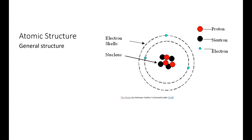If we look at the general structure of an atom, we have protons, neutrons, and electrons. The protons and the neutrons are here in the nucleus, in the center of the atom. Protons are positively charged particles, neutrons are neutral particles, and electrons are negatively charged particles. The electrons orbit around the outside of the nucleus, and we'll talk a little bit more about that structure of electrons in our next unit.